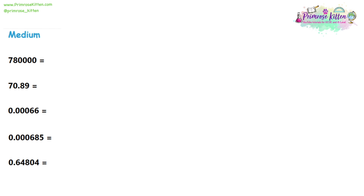Moving on to the medium questions, we're going to use the same method. Find the first non-zero number — we have a 7 in our first question. Then an extra bit for the medium questions: we are going to preserve all the other numbers. So we can see there is an 8, so we're going to write 7.8. We're not going to write 78 — standard form always uses a single digit number, only in the units column. But if you do have any additional detail like the 8, you can put those on as decimal places. So it's standard form, multiplying by 10. Count the number of places after the 7: 1, 2, 3, 4, 5. So it'll be 7.8 times 10 to the 5. It's really important to note I'm not counting the number of zeros — there are four zeros and it's to the power of 5. I'm counting the number of digits after the 7, and that does include the 8. So it's power 5, not power 4 — that's a common mistake.